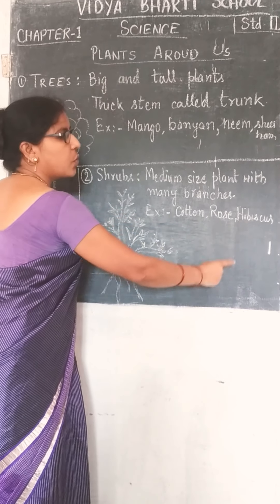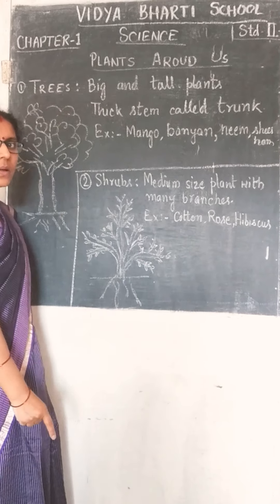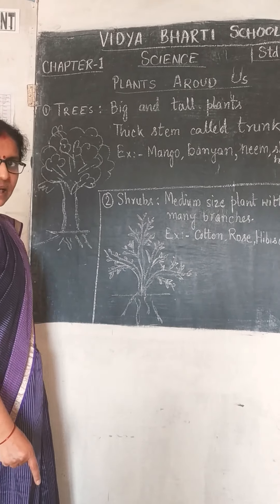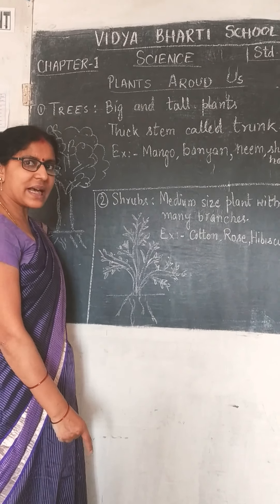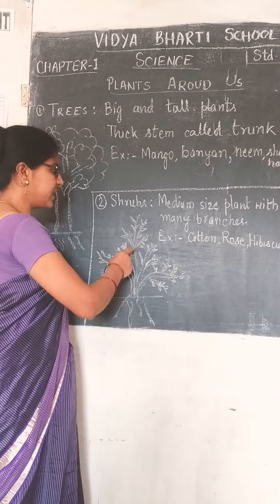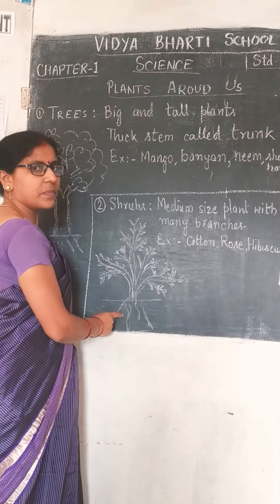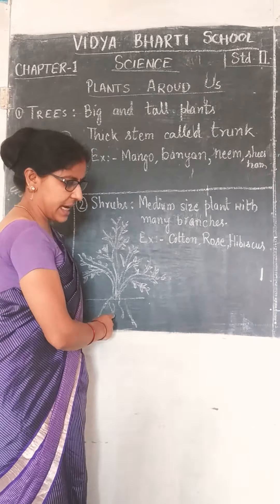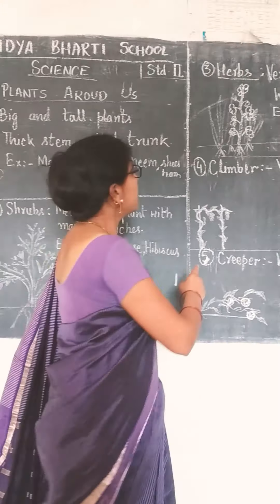Shrubs के examples हैं - Hibiscus यानि गुड़हल का पेड़, Hina यानि Mehendi, और बहुत सारे medium-sized plants जो झाड़ियों की तरह होते हैं.